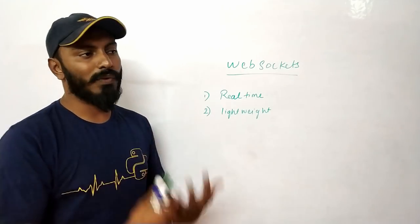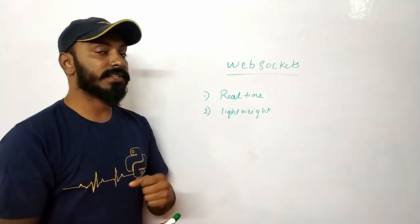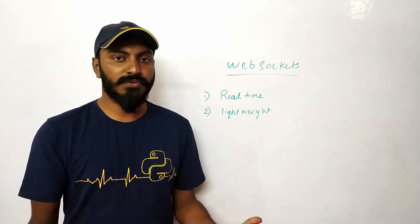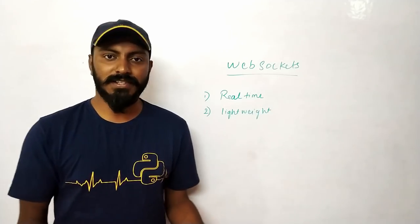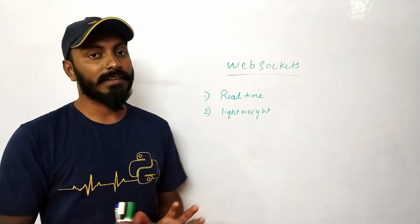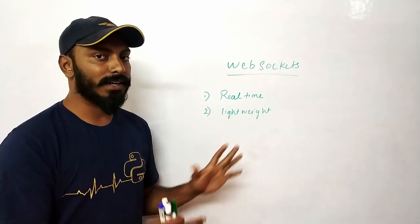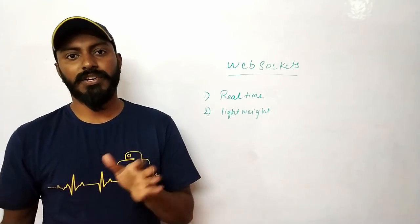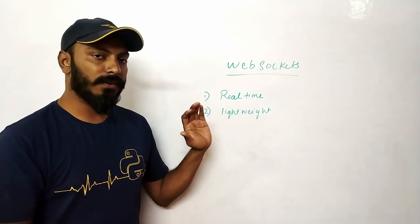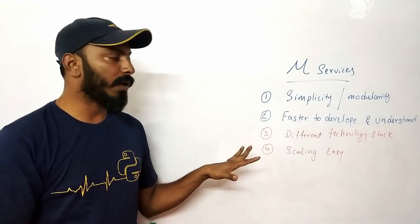On the server side, we can use Node.js, which handles lightweight messages well and is built for these use cases. When we combine WebSockets with Redis, we get cool features like a chat feature for users editing the document, and we can show in real time where exactly each user's cursor is in different colors as they collaborate on that document. All of this is possible because of WebSocket real-time communication.